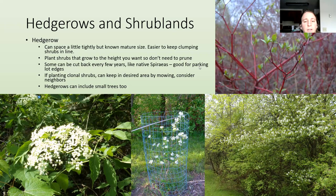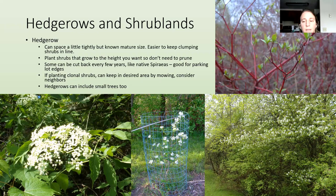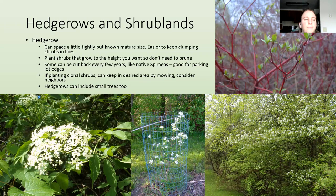Some shrubs can be cut back every few years, like native spireas, which are good for more disturbed areas like parking lots where snow plows can mess them up in winter — you can just cut them back and they'll grow back up fine. If you're planting clonal shrubs, you can keep them where you want by mowing along the edges. Hedgerows can also include small trees — hawthorn growing on the edge of the woods is a nice native small tree, though it does have pretty big thorns.